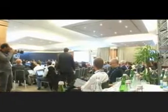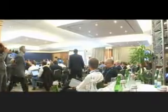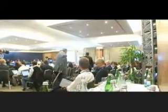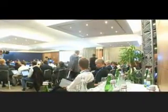ICANN's organizational structure consists of its board, staff, supporting organizations — each with its various constituencies and councils — advisory committees, security, government, and at-large advisory committees, and many ad hoc standing committees.